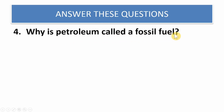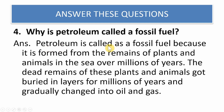Why is petroleum called a fossil fuel? Petroleum is called a fossil fuel because it is obtained from the remains of plants and animals in the sea. Over millions of years, the dead remains of these plants and animals got buried in layers and gradually changed into oil and gas.